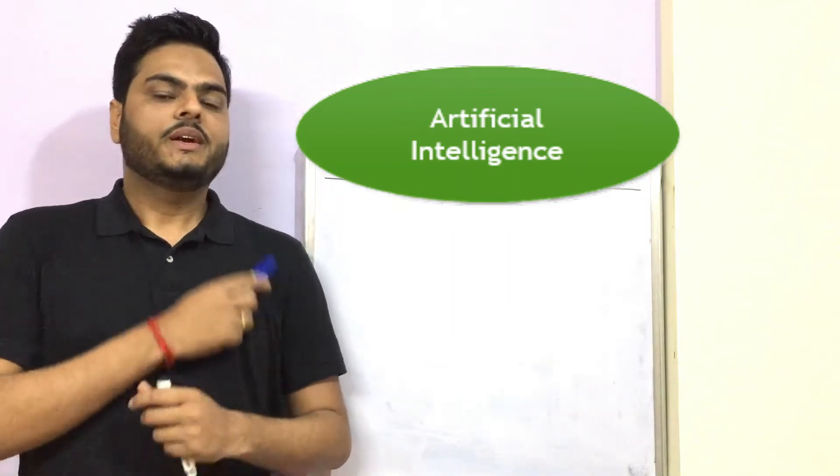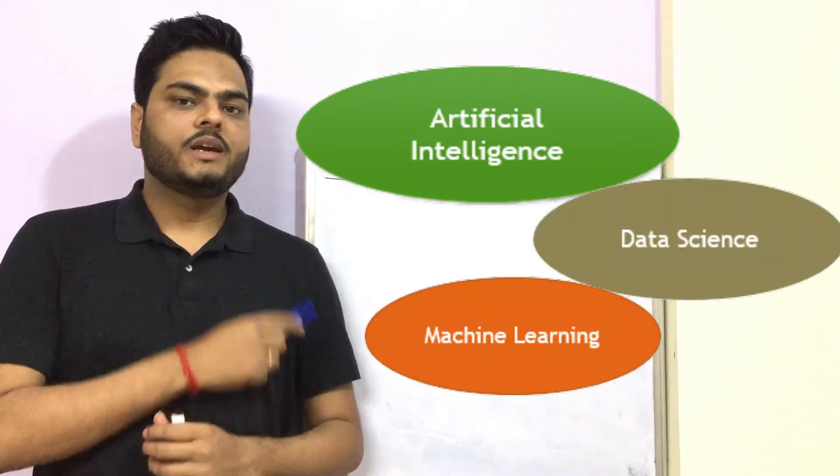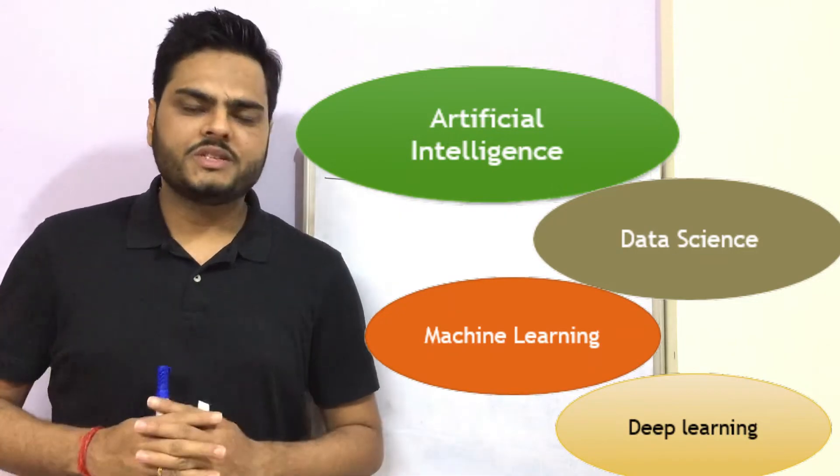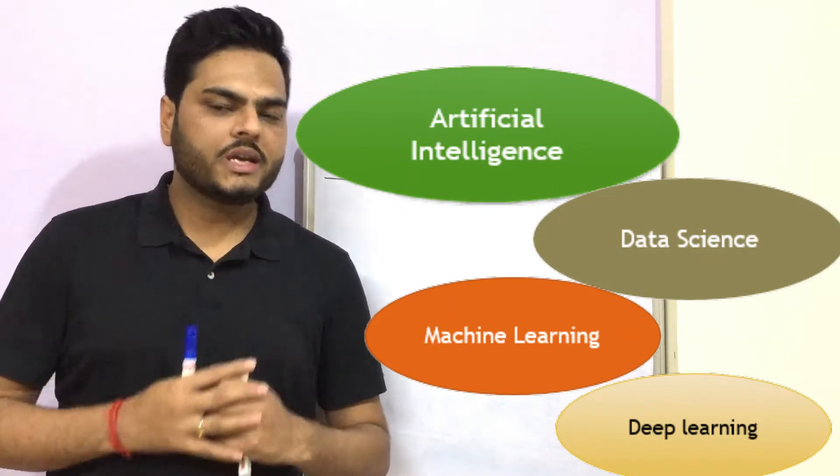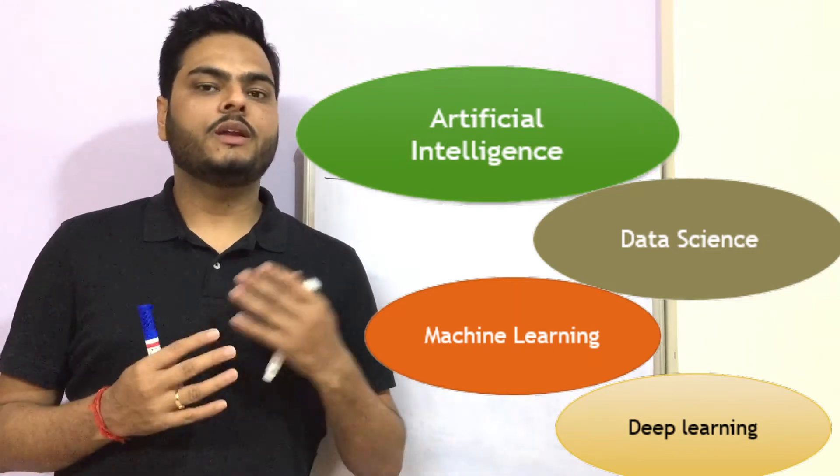Artificial intelligence, data science, machine learning, deep learning - are these things the same or are these things different? If same, then till what extent? If different, then how different?